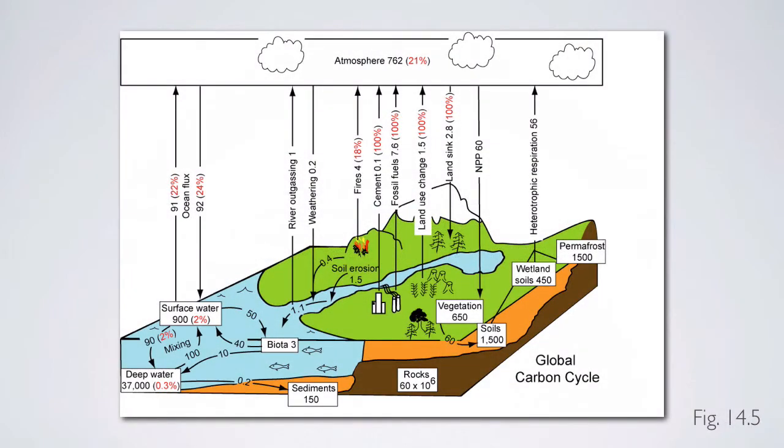When we take a look at this global carbon cycle figure, figure 14.5, you can see that here there's a separate term for the land sink, which is 2.8 petagrams of carbon per year. And if you look, here's NPP versus respiration, heterotrophic respiration. And there's more net primary productivity than there is heterotrophic respiration. And so in that sense, terrestrial ecosystems are taking up more carbon than they're releasing into the atmosphere on an annual basis.